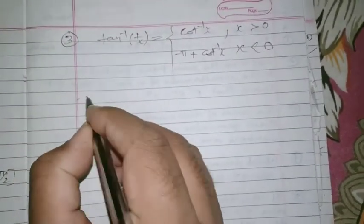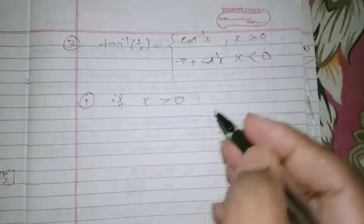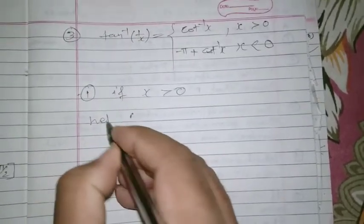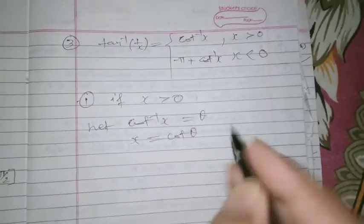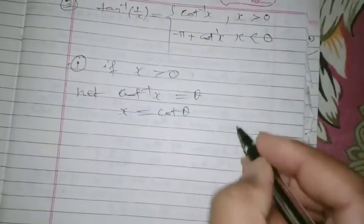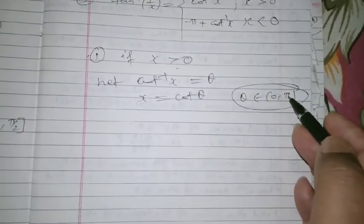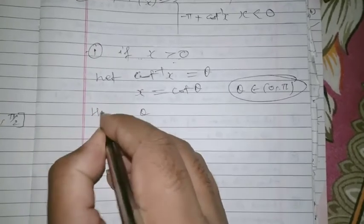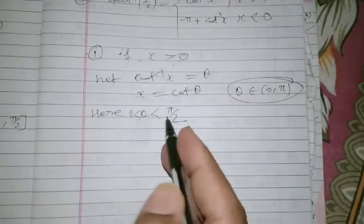First case: if x is greater than 0. Let cot⁻¹(x) = θ, so x = cot θ. Since cot is invertible, θ belongs to 0 to π. But x is greater than 0, and cot is positive only in the first quadrant within 0 to π, so θ must satisfy: θ is greater than 0 and less than π/2.